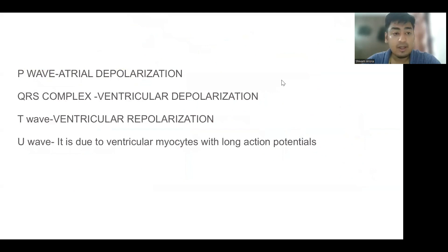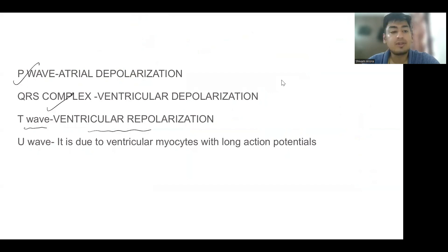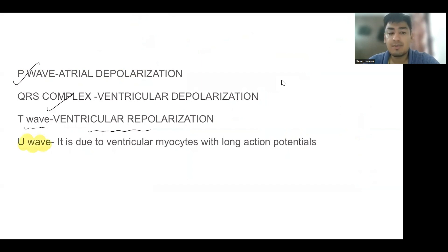In ECG the basic waves are: a P wave, which is due to atrial depolarization; a QRS complex, which is due to ventricular depolarization; a T wave, which is due to ventricular repolarization; and a U wave, which has different proposed mechanisms — one accepted mechanism is that it is due to ventricular myocytes with long action potentials.